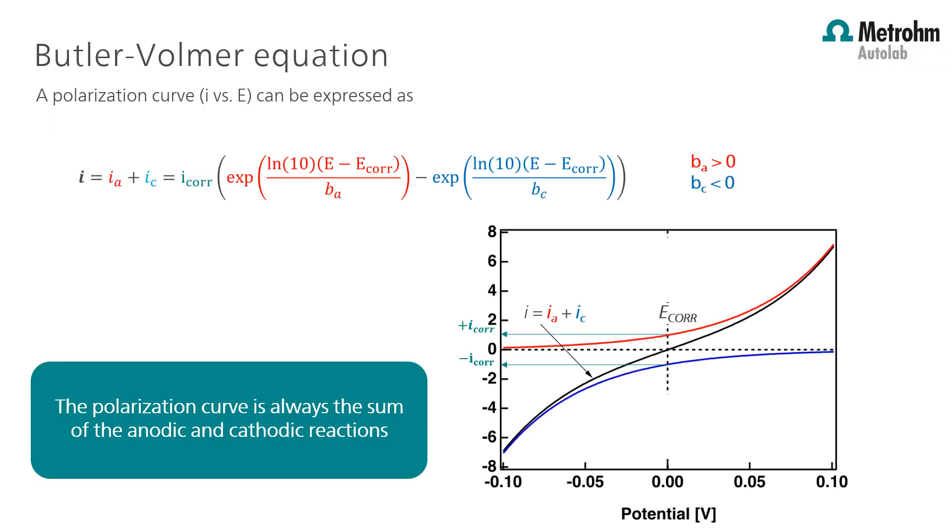How do we go from the current versus potential curve to the corrosion rate measurement? When we polarize a sample, the potential is applied and the current is measured, which is always the sum of the anodic reaction and the cathodic reaction. The anodic reaction can be, for example, the rate of the iron dissolution into the electrolyte. And the cathodic reaction would be the rate of hydrogen evolution.